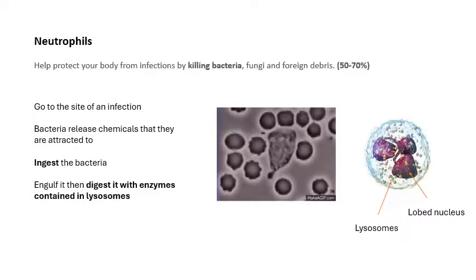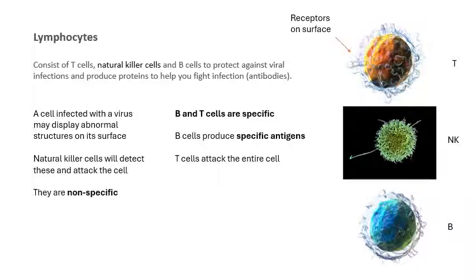Looking at the picture, you can see the lysosomes and the lobed nucleus — that's neutrophils, the most common type of white blood cell. Now, lymphocytes: there are different types — B cells, T cells, and natural killer cells. Natural killer cells, like neutrophils, are non-specific. If a cell becomes infected with a virus, abnormal structures appear on its surface that shouldn't be there, and the natural killer cells detect that and attack the infected cell.